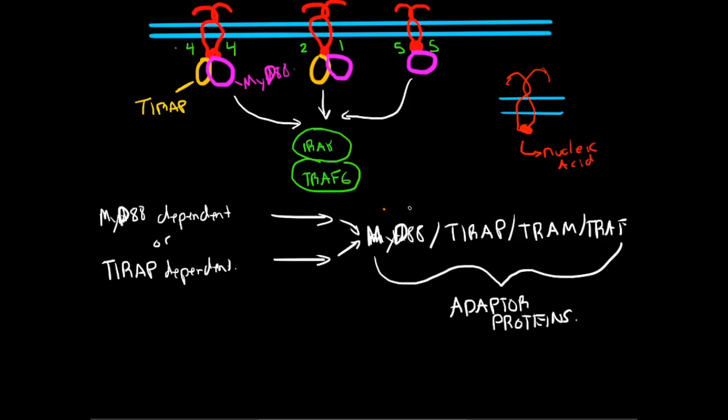So MYD88, TRAP, TRAM, and TRAF are all adapter proteins. Now, how do they work? I'm going to try and make this as simple as possible. TRAP, what does it do? It promotes MYD88 recruitment to the cell surface toll-like receptors: 4, toll-like receptor 2-1, toll-like receptor 2-6, and 4.